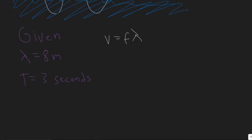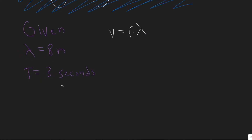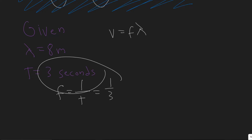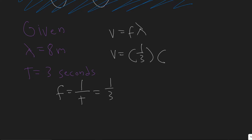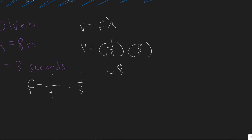The formula uses frequency, not period. Frequency is one over the period, so in this case it's one over three. Now we know the frequency and the wavelength — it's just a matter of plugging in: one-third multiplied by lambda, which is eight, gives you eight over three. Eight over three is 2.666 repeating, so we round to 2.67.